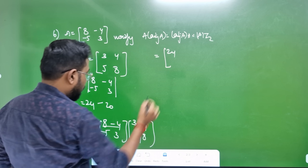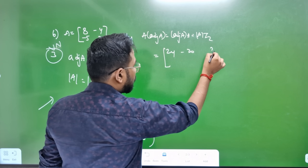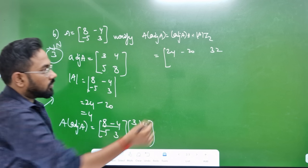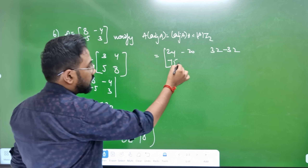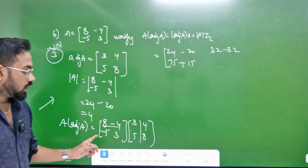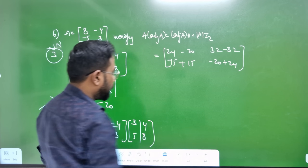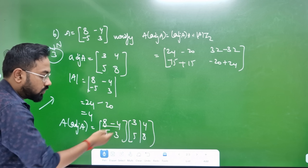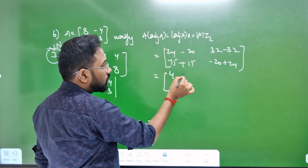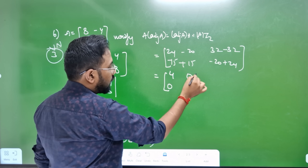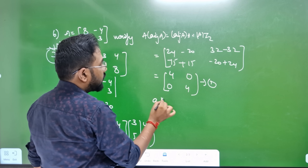Minus 5, then add 2. So that's what we're doing: 24 and 24 is 4, 0, 0, 4. That's what we're doing — this is the first equation. The second equation: adjoint A into A.